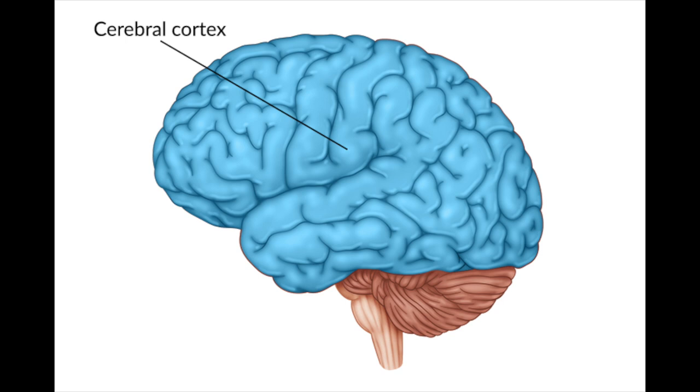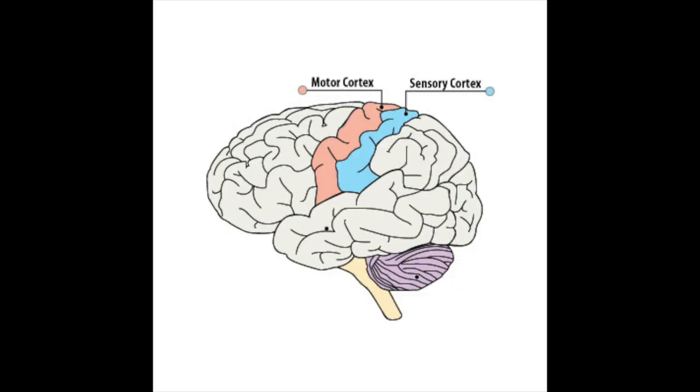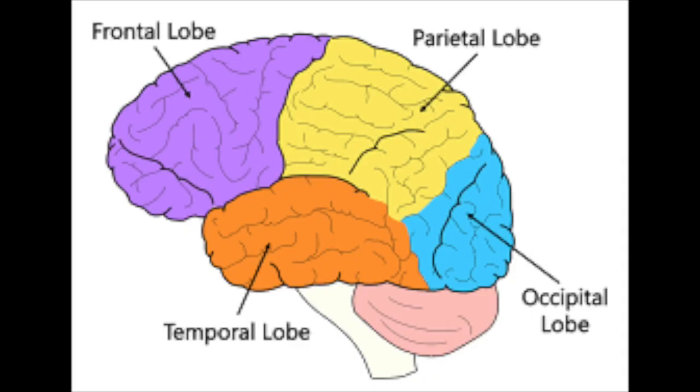Now let's move on to your cerebral cortex, which is the wrinkled outer layer of the brain. Your cerebral cortex is involved in many cognitive functions such as thinking, language processing, and planning. There are two parts: the sensory cortex, which receives sensory input, and the motor cortex, which sends out motor information to the rest of your body. Within your cortex, you have lobes: the frontal lobe, the parietal lobe, the occipital lobe, and the temporal lobe.